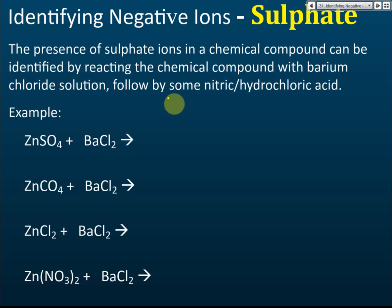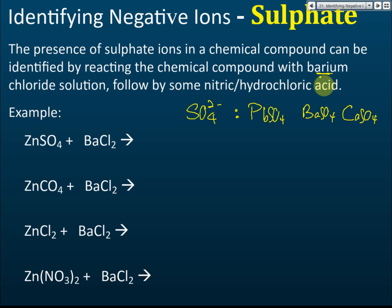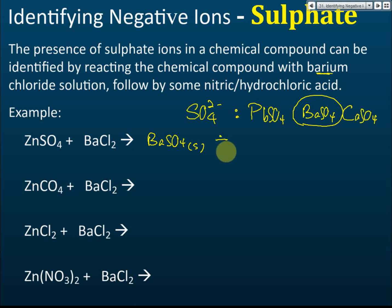If you remember from solubility rules, most sulfates are soluble except PBC — lead sulfate, barium sulfate, and calcium sulfate. So if we react sulfate with barium chloride, it produces barium sulfate. Barium sulfate is insoluble, so it's a solid — it's white in color. This is a white precipitate. This is a double decomposition reaction, and you also get zinc chloride.